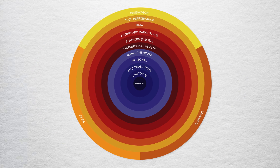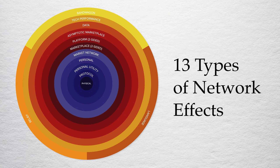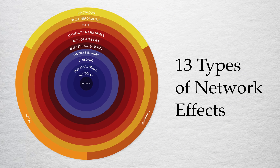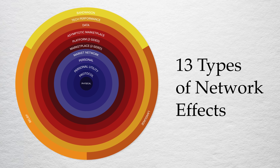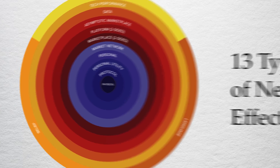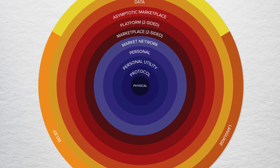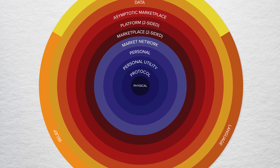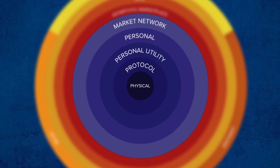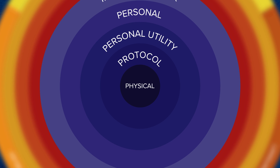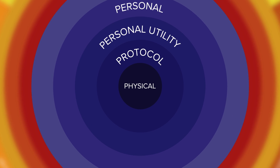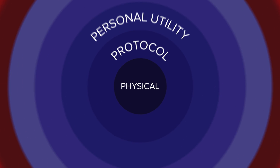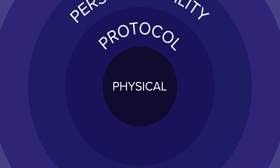Within Network Effects, right now we count 13 different types, each with its own playbook. We start in the middle of the map with the strongest network effects and then we move out. The blue network effects are what we call direct network effects, where each new user adds value to every other user.